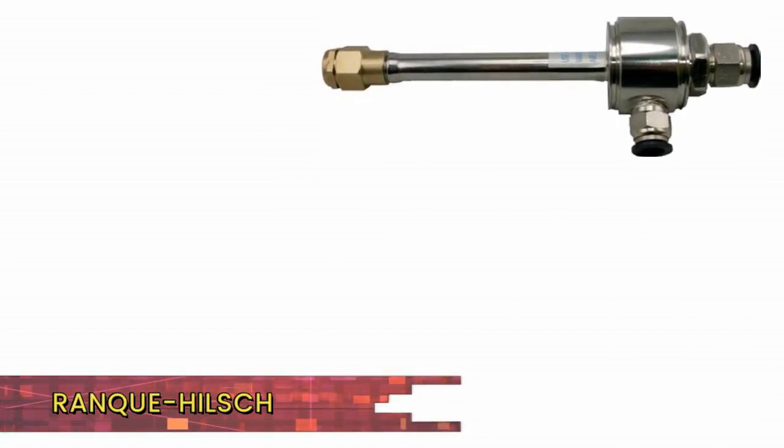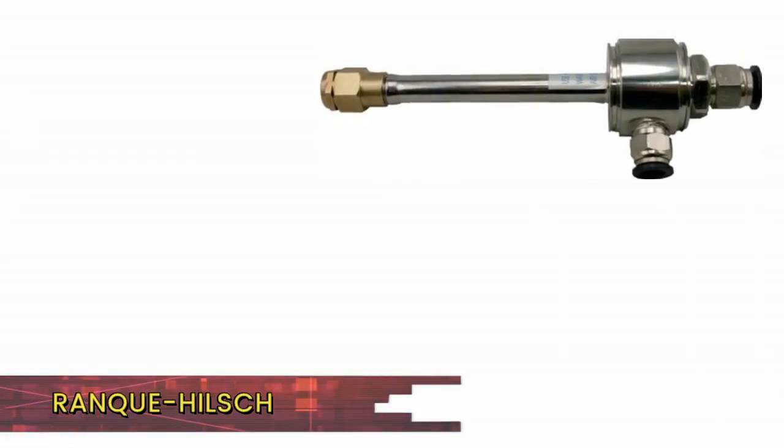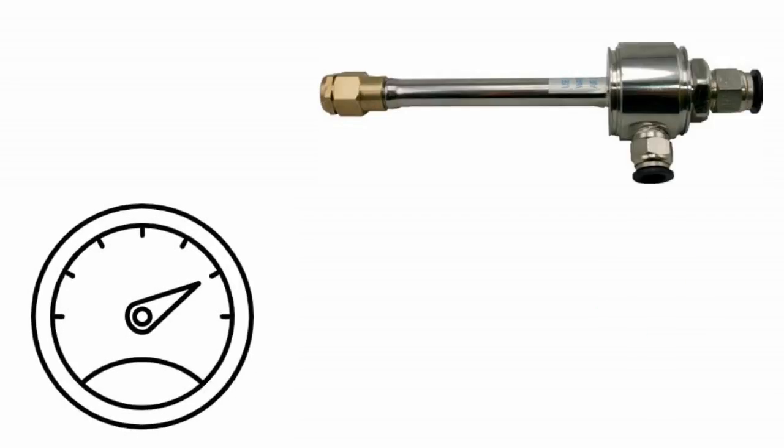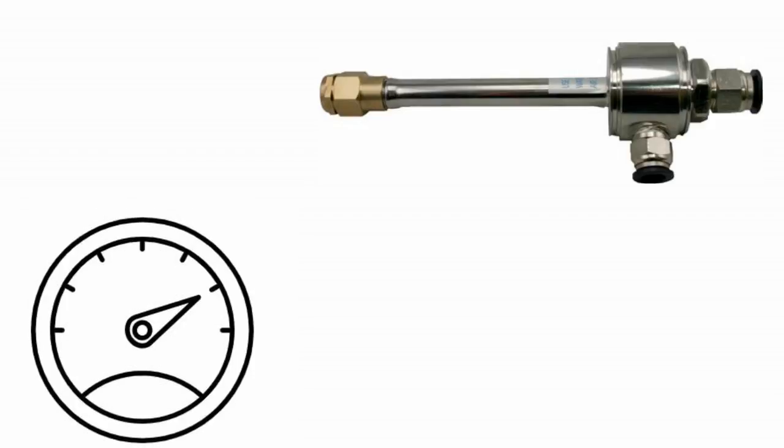The vortex tube, also known as the Ranque-Hilsch vortex tube, is a fascinating device that has no moving parts and yet it is able to produce streams of hot and cold air if pressurized air is supplied to it. The more pressurized air you push through it, the greater the temperature differential.